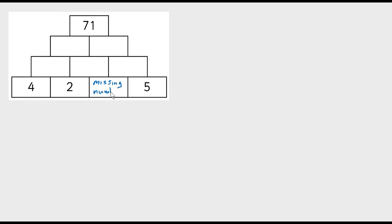I might get a bit lazy later on and not bother writing the whole thing. So let's look at the next row up. 4 plus 2 makes 6. 2 plus my missing number, well I can't work that out, but I know it will be my missing number plus 2. And my missing number plus 5 is going to be my missing number plus 5.